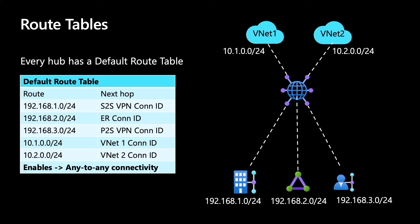There is also a new concept of a label. A label is a logical group of route tables. When you propagate to a label, it propagates to all the route tables. For the default route table, there is a built-in label called 'default.' When you propagate routes to the default label, it propagates to all the default route tables across all hubs, giving you multiple scenarios and ease of use.